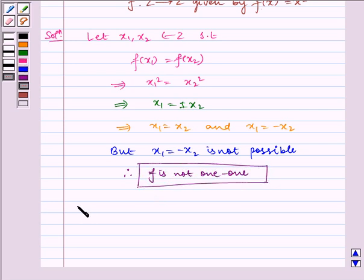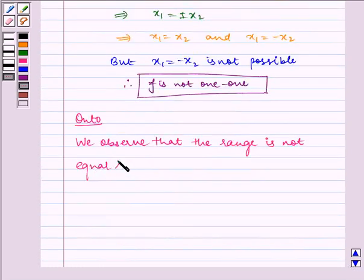Now let us check for onto. We observe that the range is not equal to codomain.